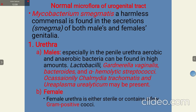Regarding the normal microflora of the urogenital tract in both males and females: their urethra will have different microbial populations. Mycobacterium smegmatis, a harmless commensal, is found in the secretions of both male and female genitalia. In the male urethra, especially the penile urethra, aerobic and anaerobic bacteria can be found in high amounts, including Lactobacilli, Gardnerella vaginalis, Bacteroides, and alpha-hemolytic streptococci. Occasionally, Chlamydia trachomatis and Ureaplasma urealyticum may also be present. The female urethra is either sterile or contains a few gram-positive cocci.